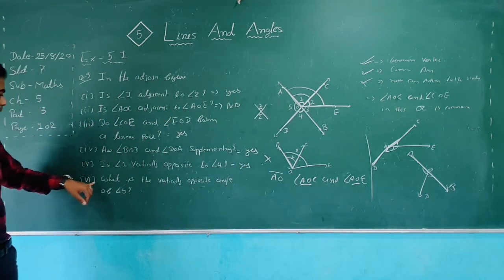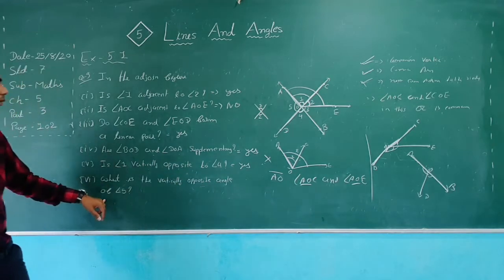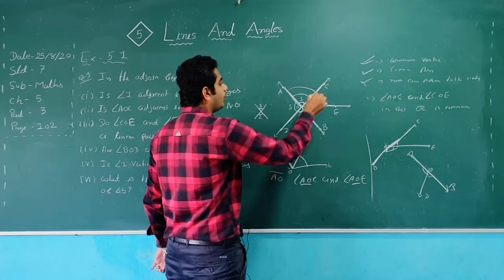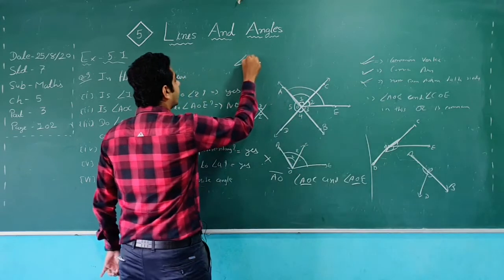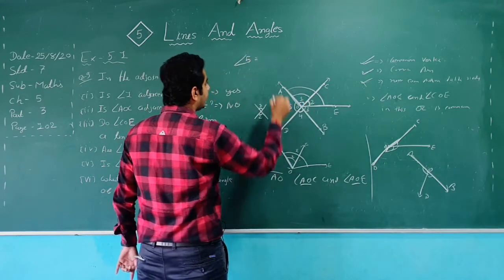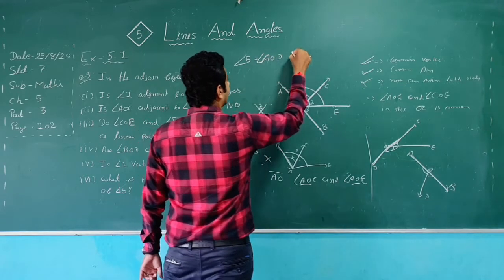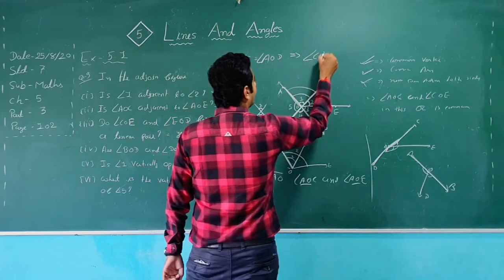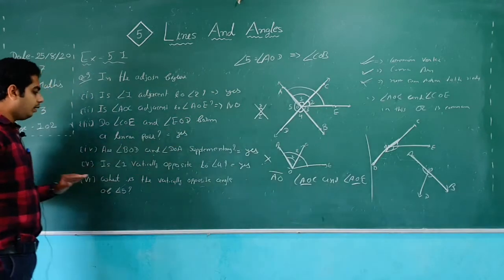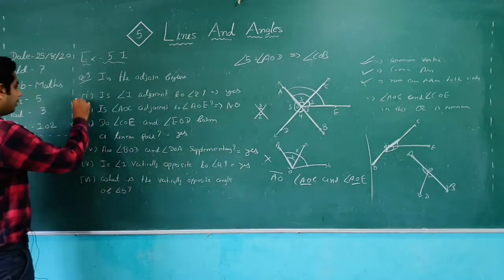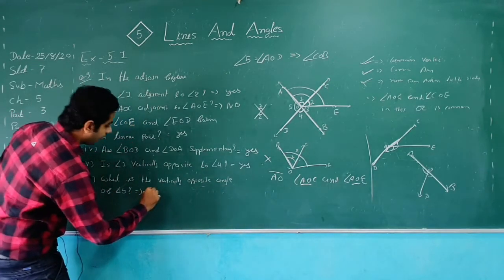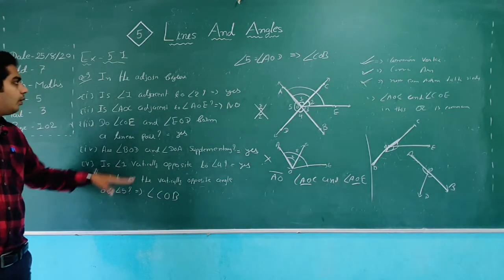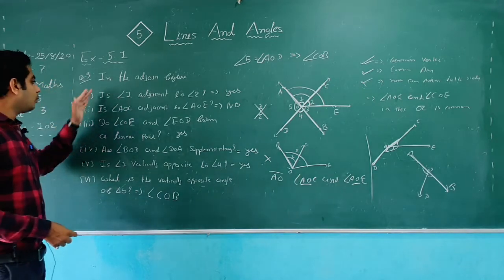Sub-question 6: What is the vertically opposite angle of angle 5? Angle 5 is equal to angle AOD. The vertically opposite angle of AOD is COB. So angle COB is the vertically opposite angle of angle 5 (AOD). That is the easy simplification of question number 9 — refer to the figure to answer each part.